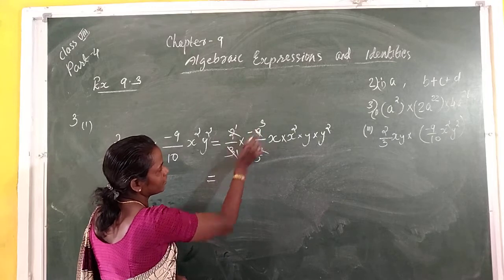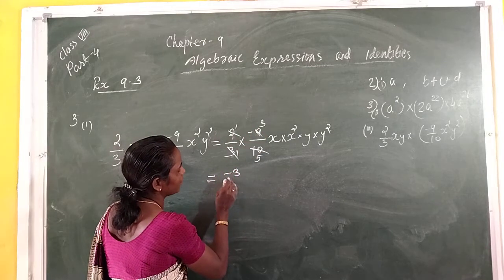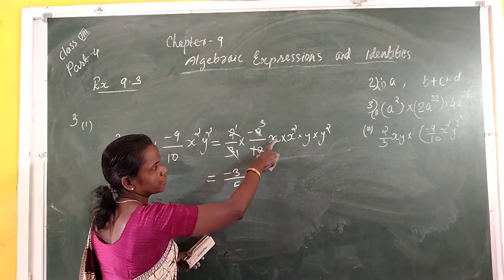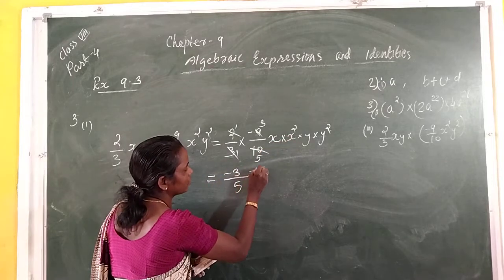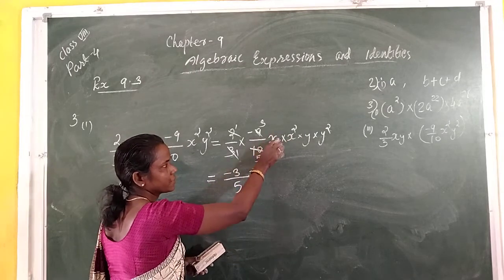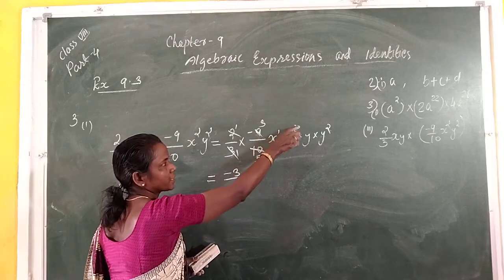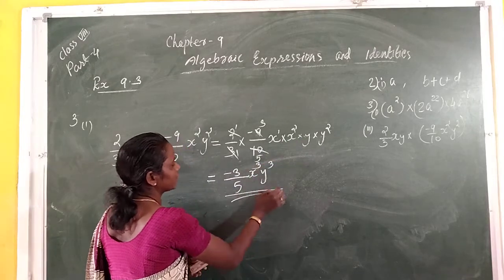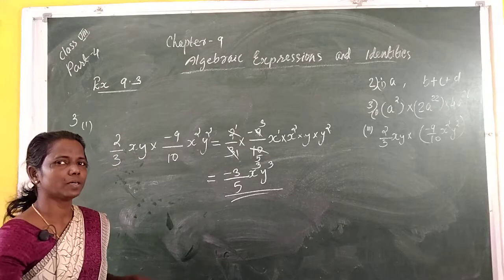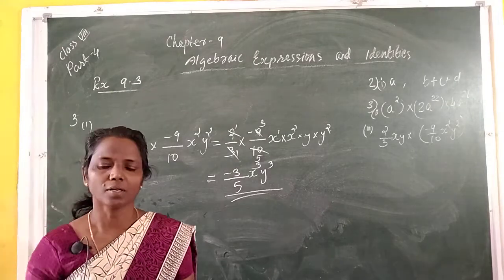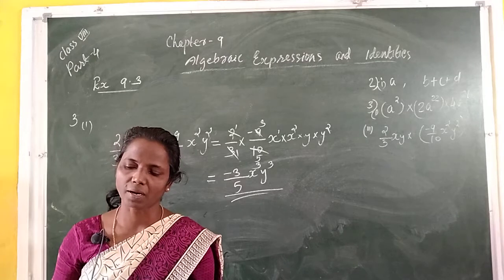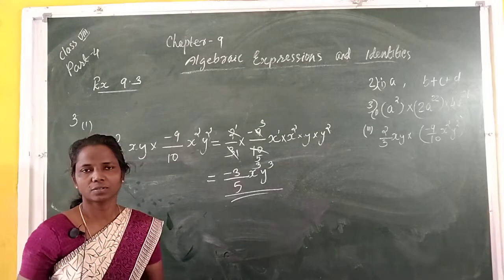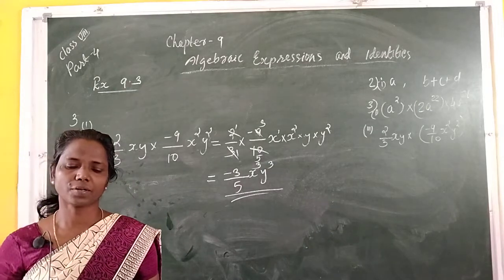So the numerical part is negative 3/5. For X: X into X² gives X³ (adding exponents: 1 plus 2 is 3). For Y: Y into Y² gives Y³. The final answer is negative (3/5) X³Y³. The remaining questions in question 3 — solve yourself and write in your fair copy. Next is question number 4. Thank you.